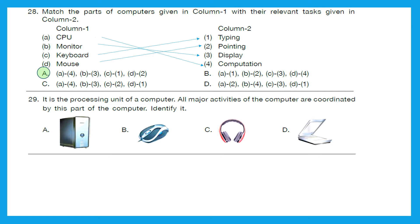Question 29: It is the processing unit of a computer. All major activities of the computer are coordinated by this part of the computer. Identify it. Let me give you a hint. It's also called the brain of the computer. And the right answer is option A, CPU.